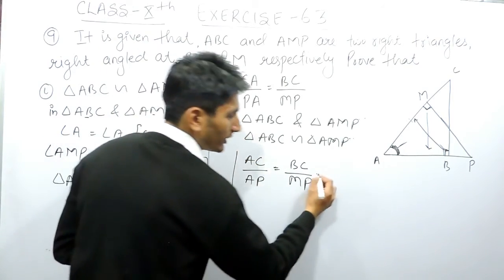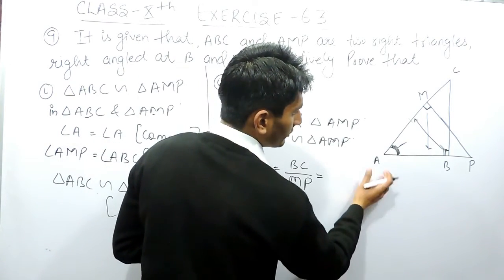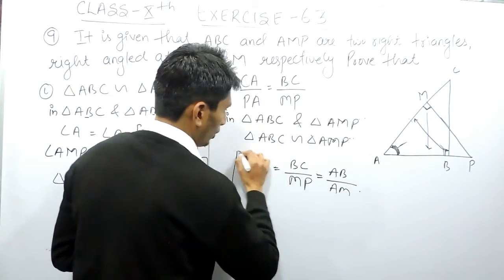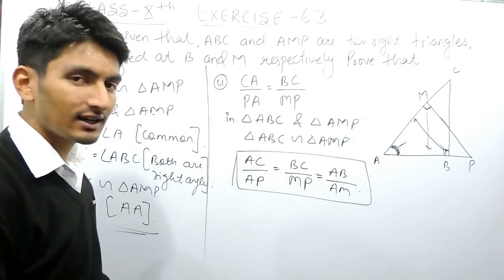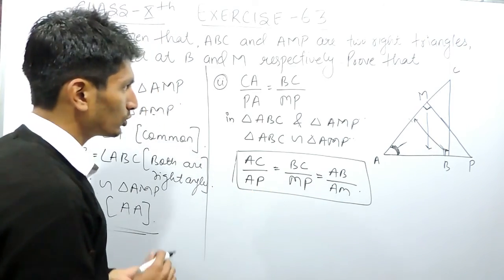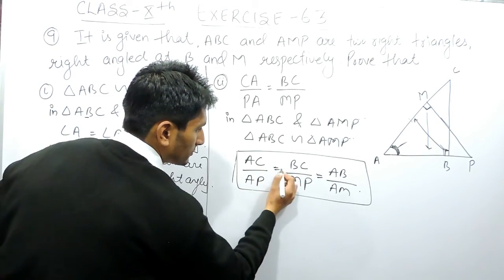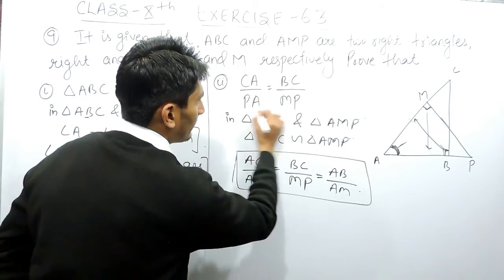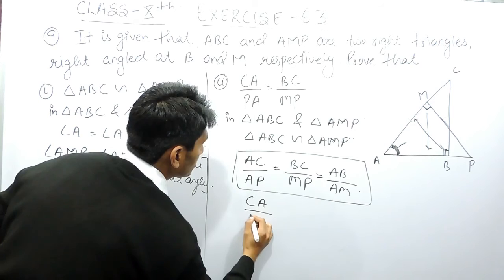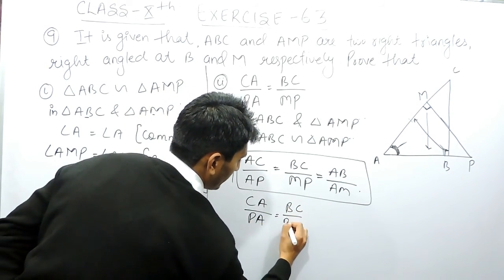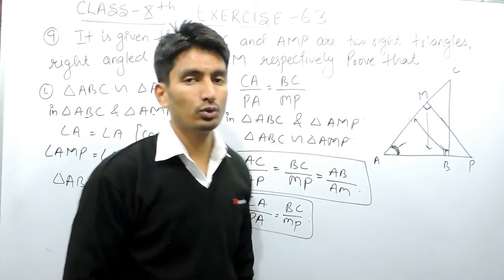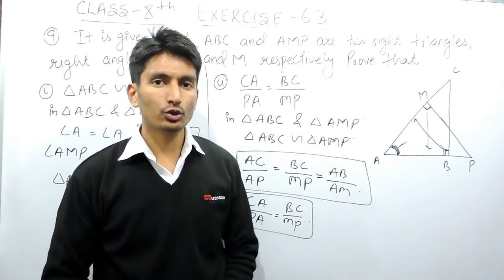These are the three pairs of corresponding sides. Since the triangles are similar, they must be in proportion. We can conclude that CA/PA = BC/MP, and the ratio AB/AM is also equal. By this, we can confirm that the ratio between the corresponding sides of the two triangles are equal.